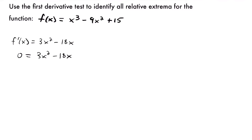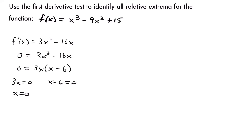I see a common factor of 3x in each term. If I factor that out, we'll have 3x times x minus 6. We can set each part equal to zero: 3x equals 0, which means x equals 0, and x minus 6 equals 0, which means x equals 6. So now we have two critical values: x equals 0 and x equals 6. Let's draw our number line and label both points.